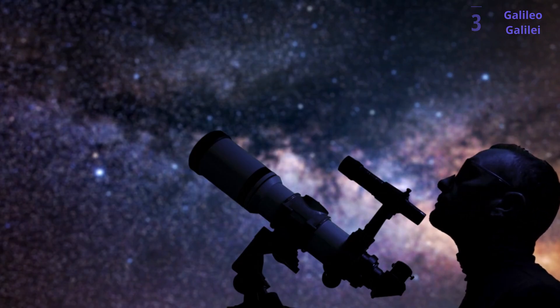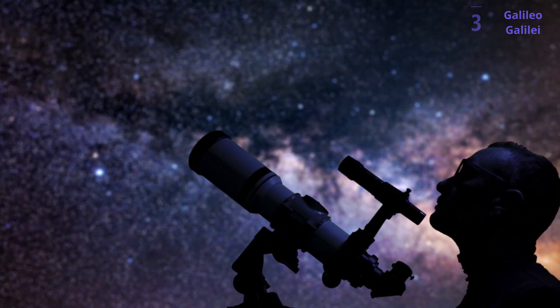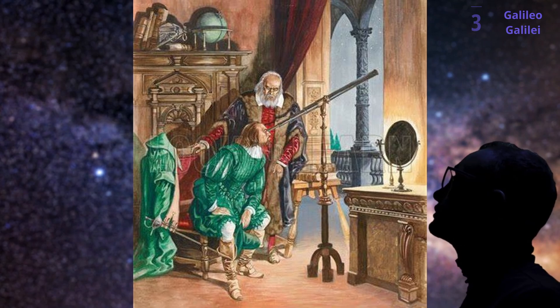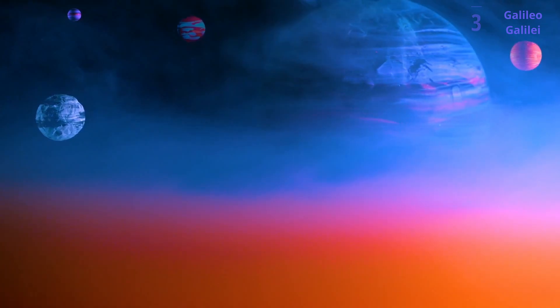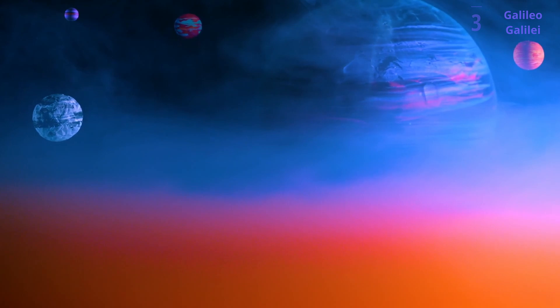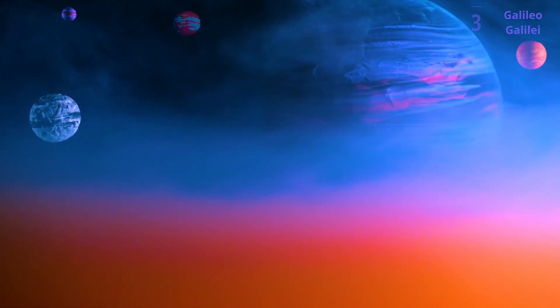Galileo didn't just theorize, he actively observed the night sky with his newly invented telescope, a revolutionary tool for astronomy. He discovered moons orbiting Jupiter, confirmed the phases of Venus, and observed sunspots, changing the way we view the heavens.